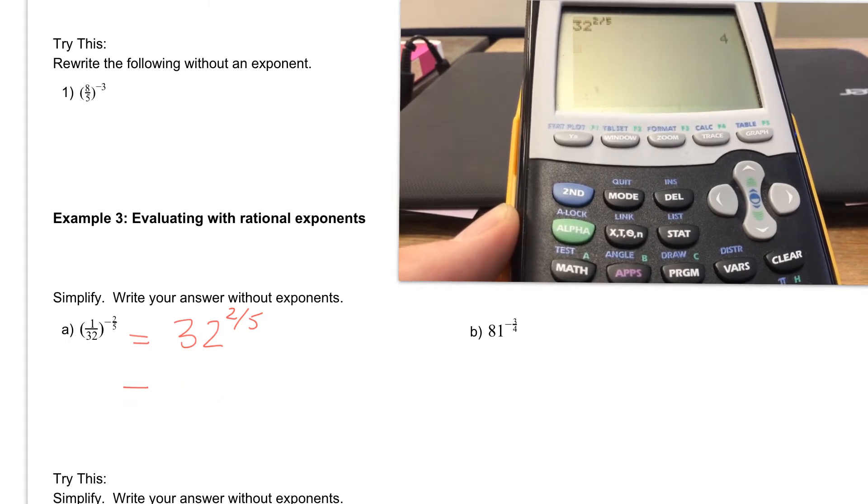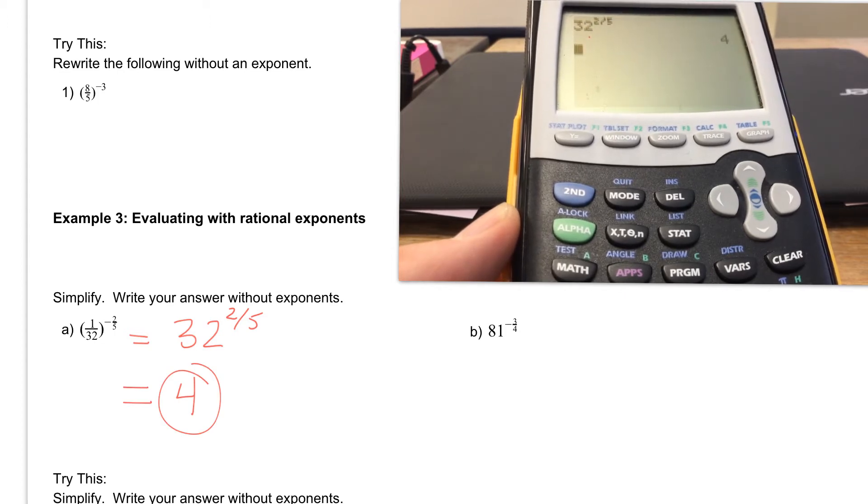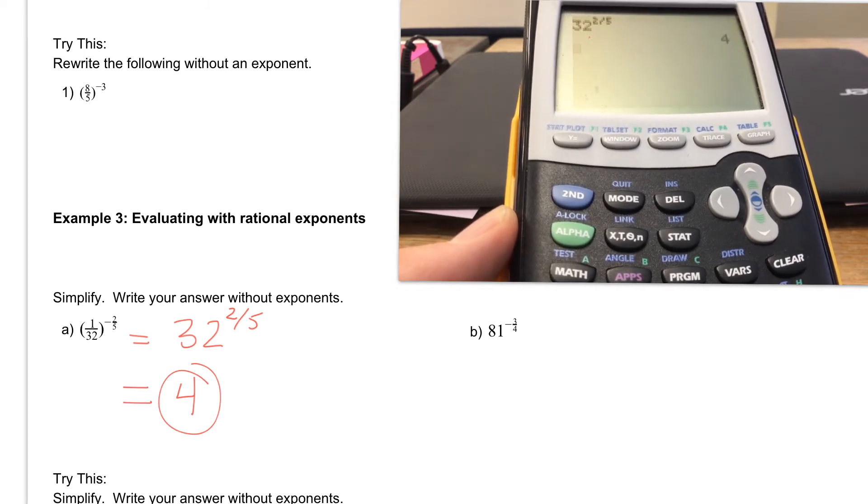Now, some calculators won't have this exponent up here. So if that's the case, you might have to put that 2 divided by 5 in parentheses, depending on which calculator you're using. So be careful on that.